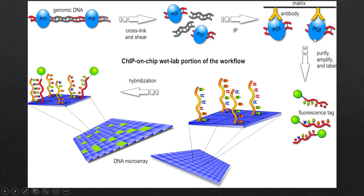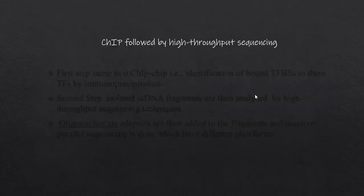Now we have only the complex of interest, free from unbound double-stranded DNA. We treat this with the microarray — short sequences covering respective portions of the genome of interest. Before applying to the microarray, we attach a signal-producing element, such as a secondary fluorescent antibody. When the complex hybridizes to the sequences on the microarray, a signal is produced at the position where the protein of interest binds.